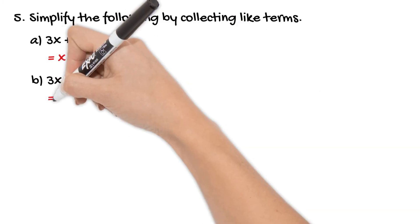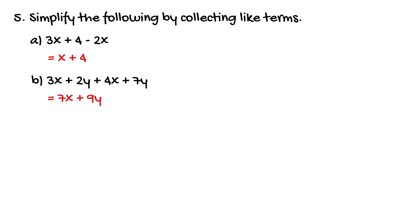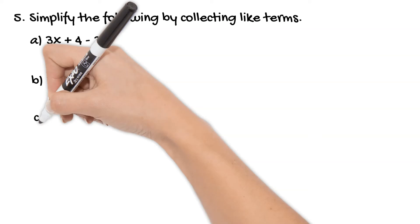Then our second example is 3x plus 2y plus 4x plus 7y. So we've got two different pronumerals here so we just deal with them separately. So we've got 3x plus 4x that gives me 7x. 2y plus 7y gives me 9y. So my final expression would be 7x plus 9y.